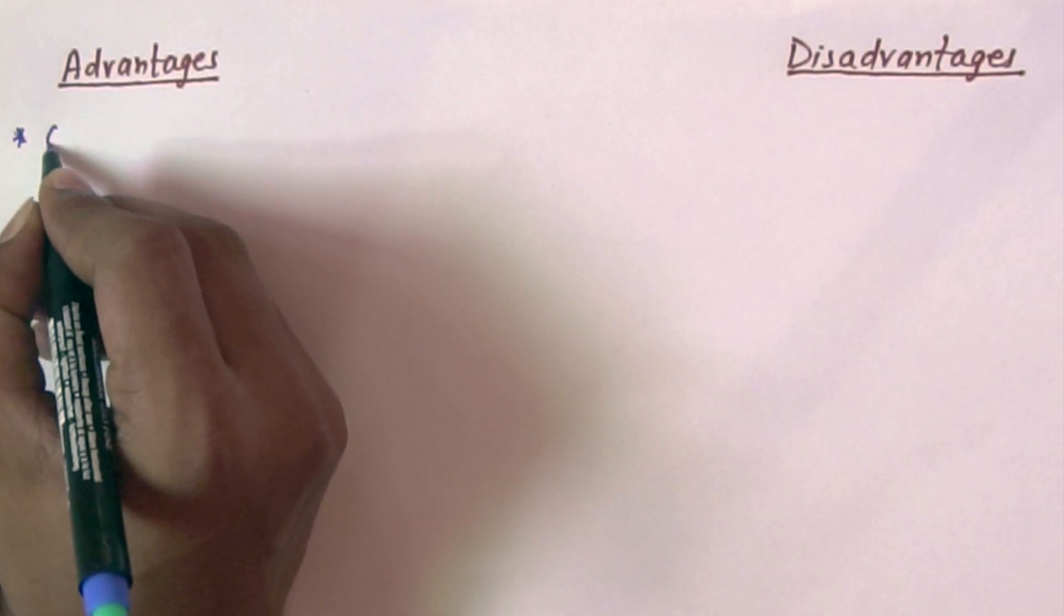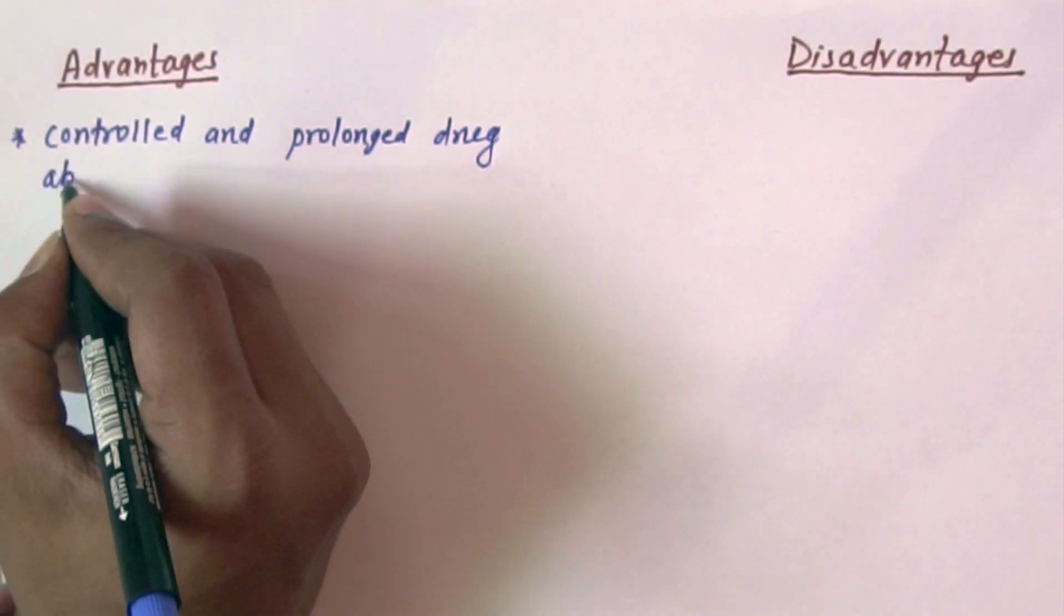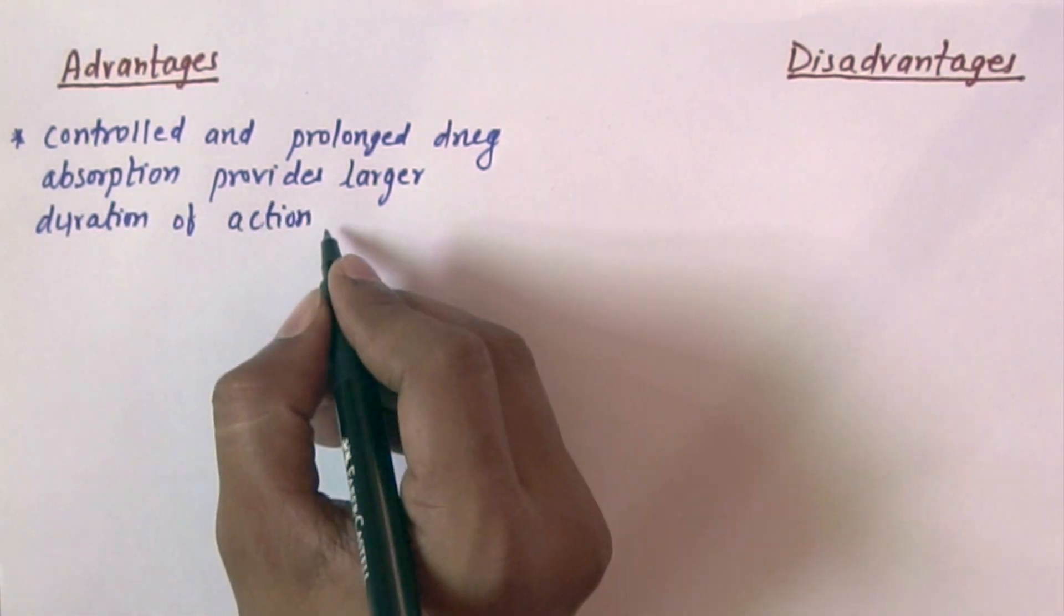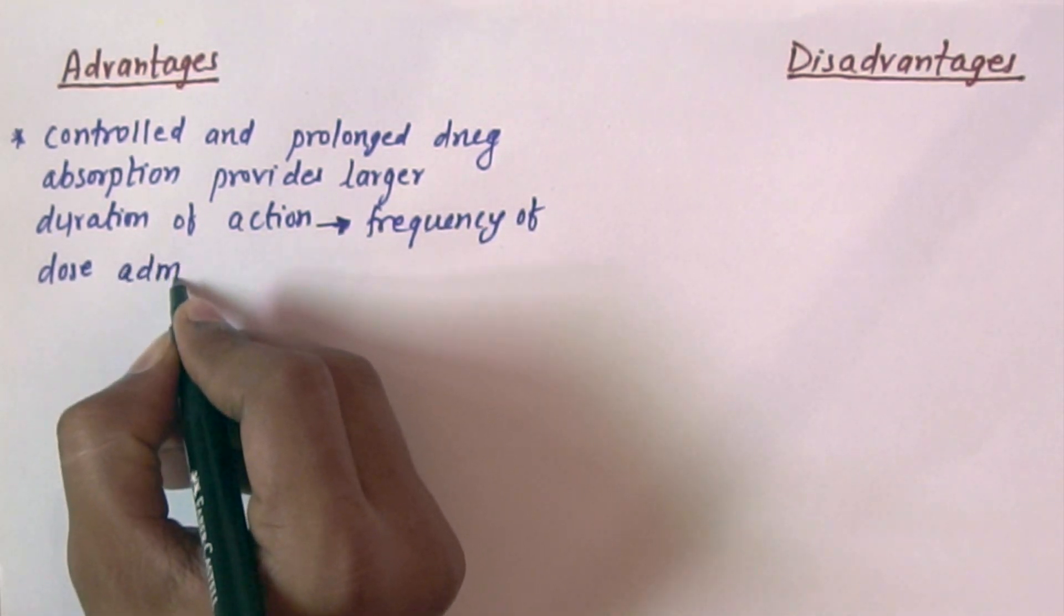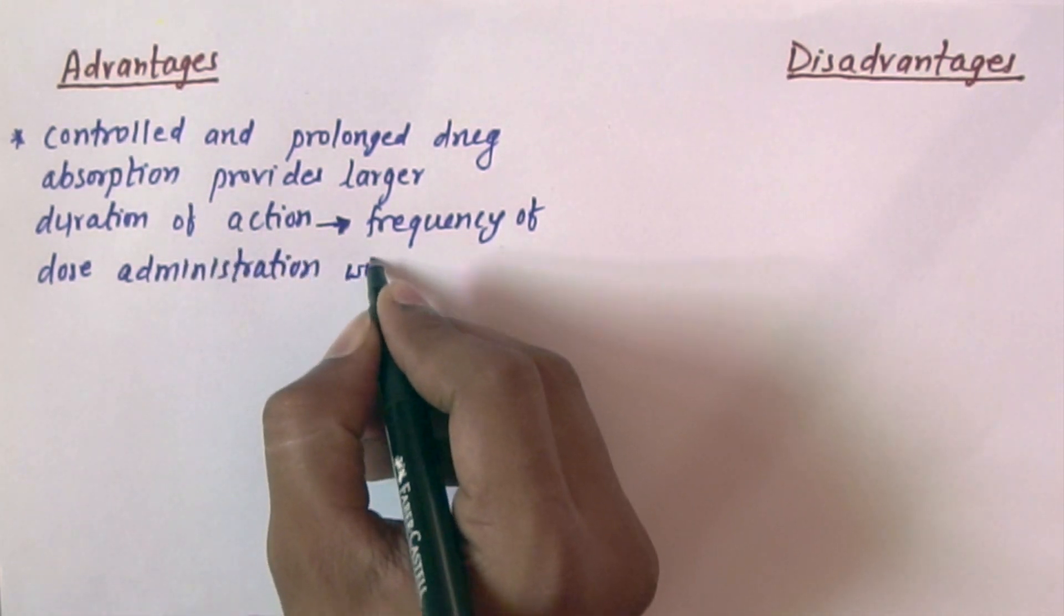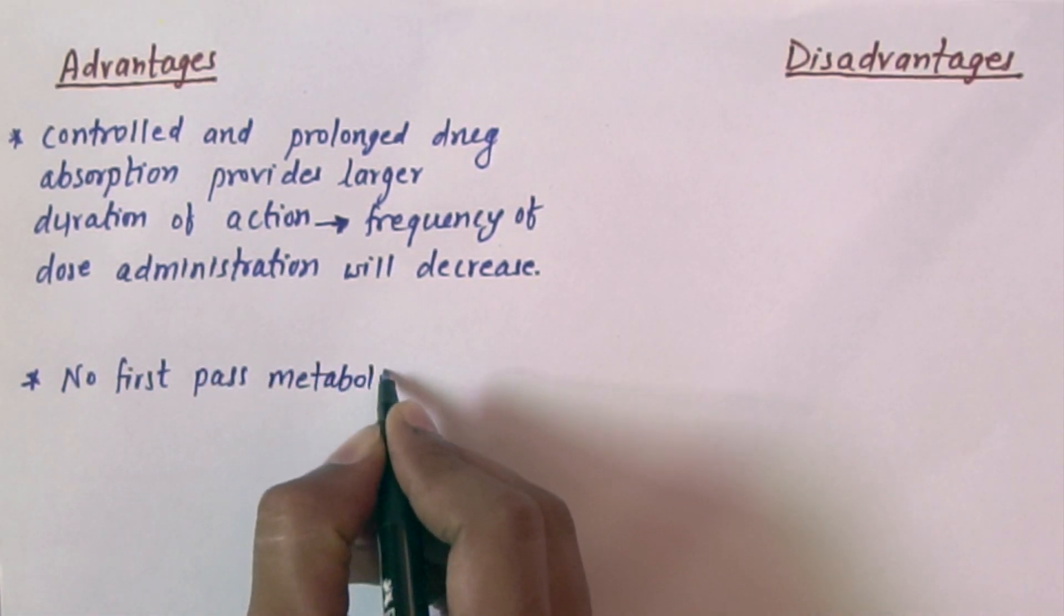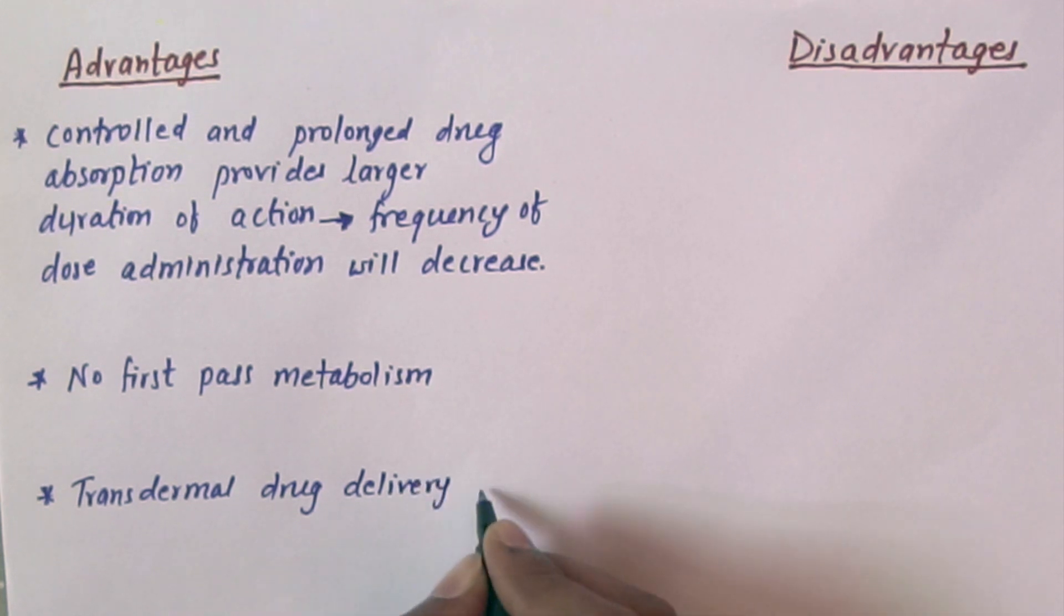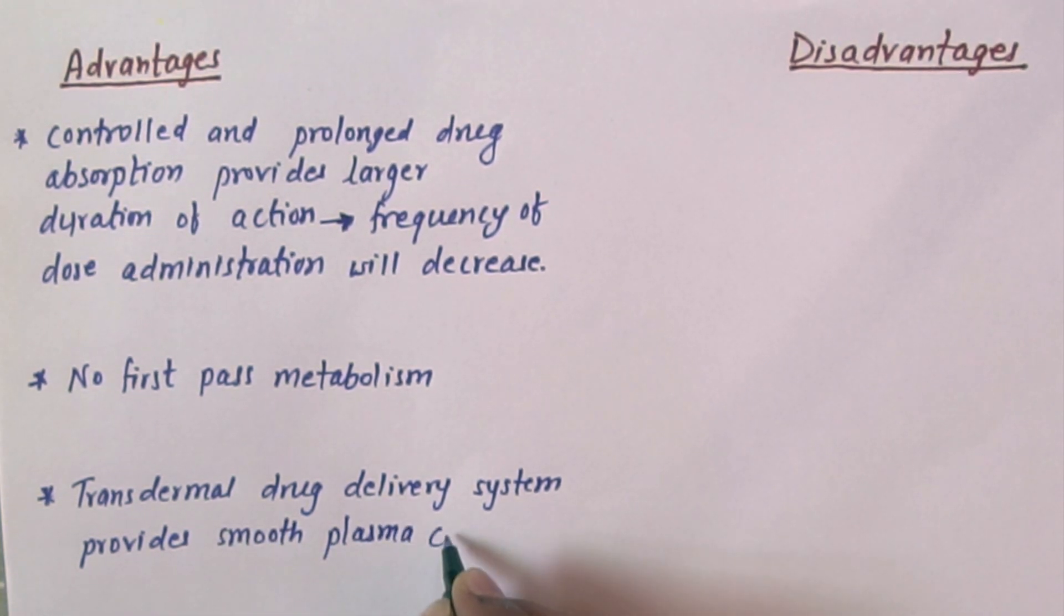We will mention a note that drug absorption can be enhanced by rubbing the skin. So if you will rub, the absorption pattern will be enhanced or increased. Now we will discuss about advantage and disadvantage. The first advantage is that there will be controlled and prolonged drug absorption, which provides larger duration of action. Hence the frequency of drug or dose administration will be decreased. There will be no first-pass metabolism.